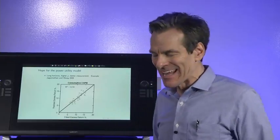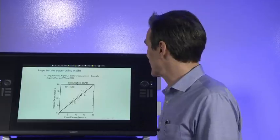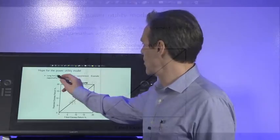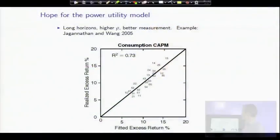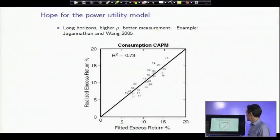And in recent research, I think there is hope for the power utility model, at least in the very long run, as a foundation for it. By looking at longer horizons, by recognizing the higher correlation of stock returns and consumption growth, which occurs at longer horizons. Stock returns and consumption aren't well correlated day-to-day or minute-to-minute, but yes, decade-to-decade. And better measurement.